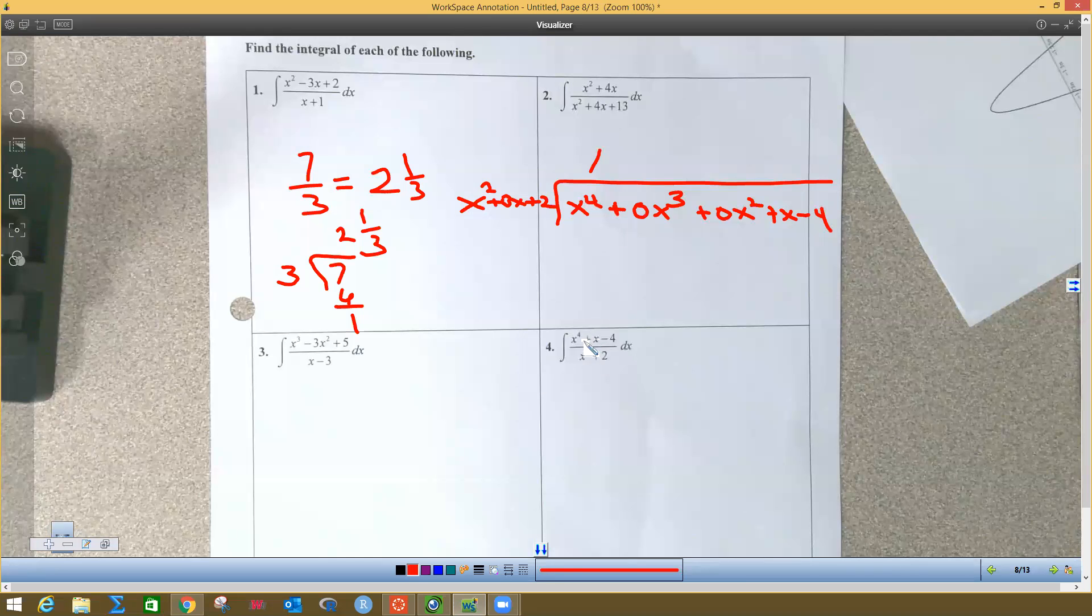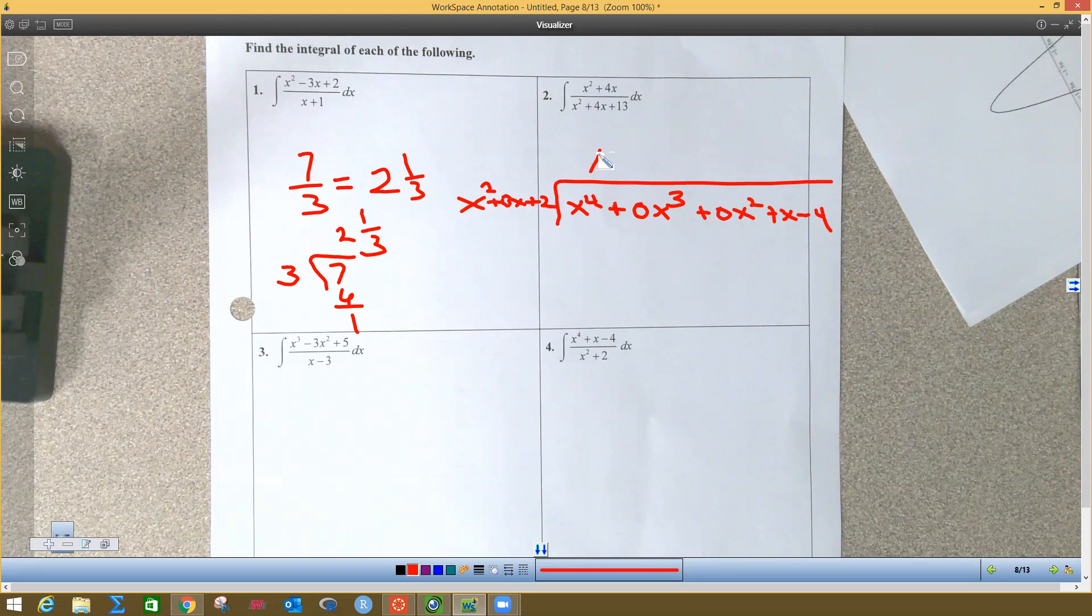Hi, so we're doing number four up here. I'm doing long division, numerator divided by the denominator. What times x squared equals this? And this would be x squared. I distribute this over here and I get x to the fourth plus zero x cubed.